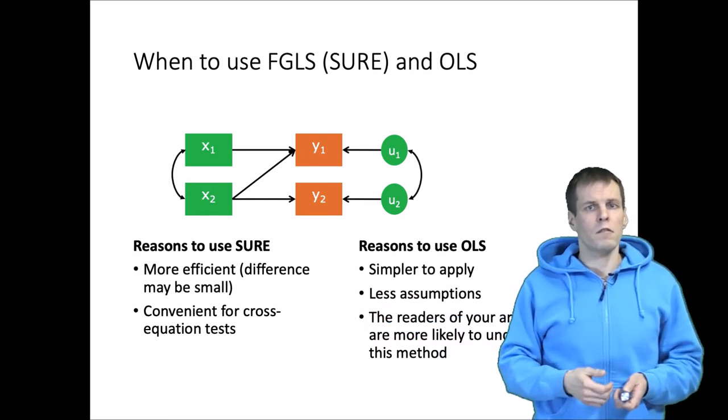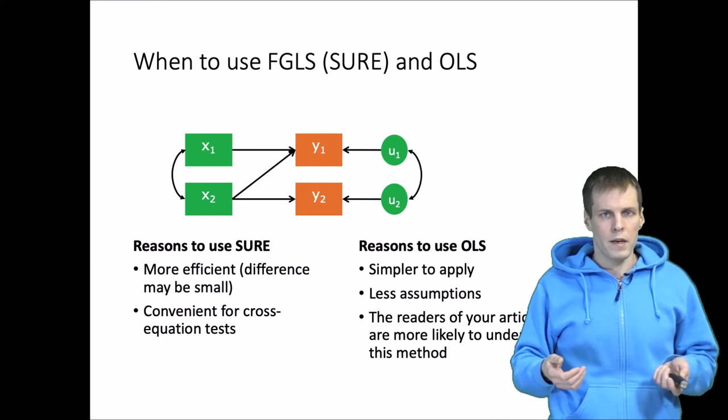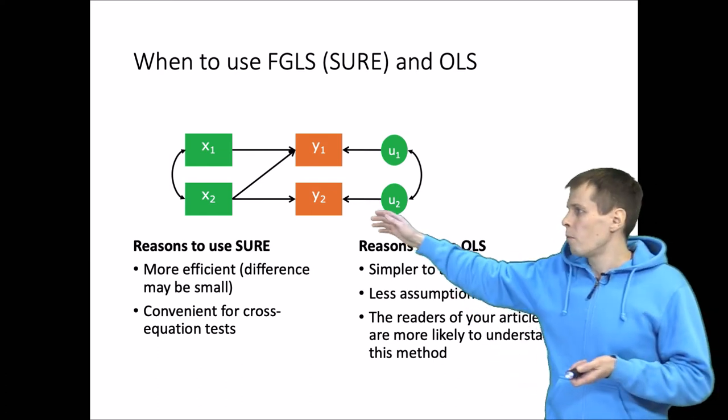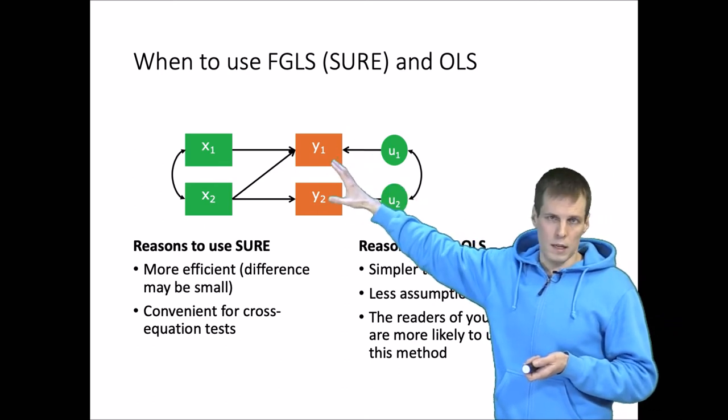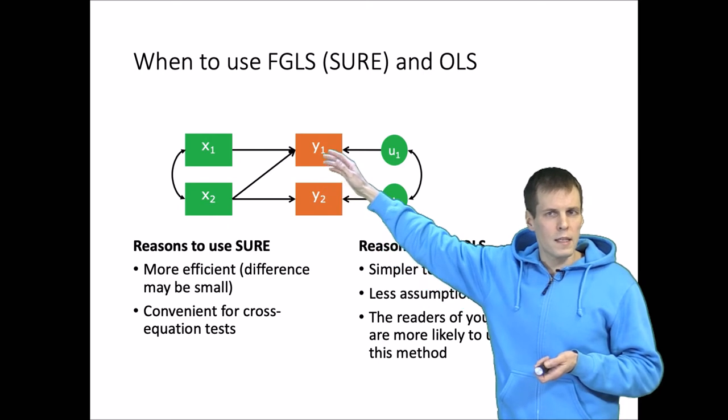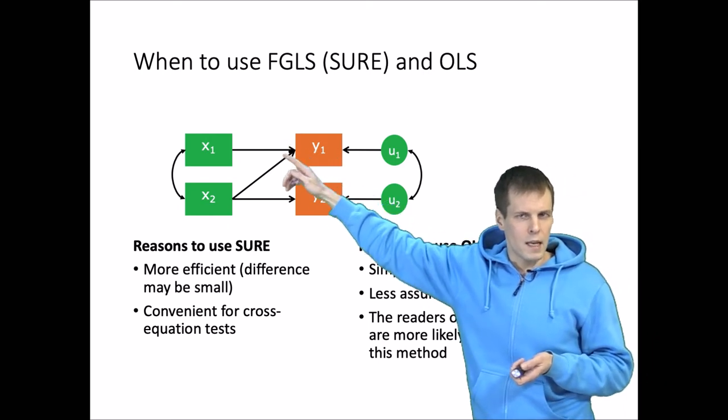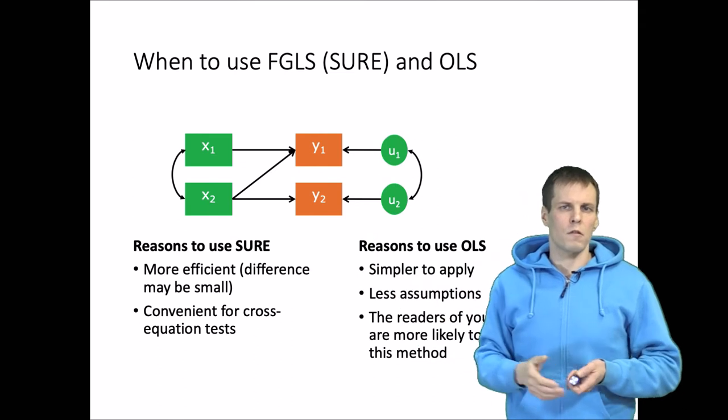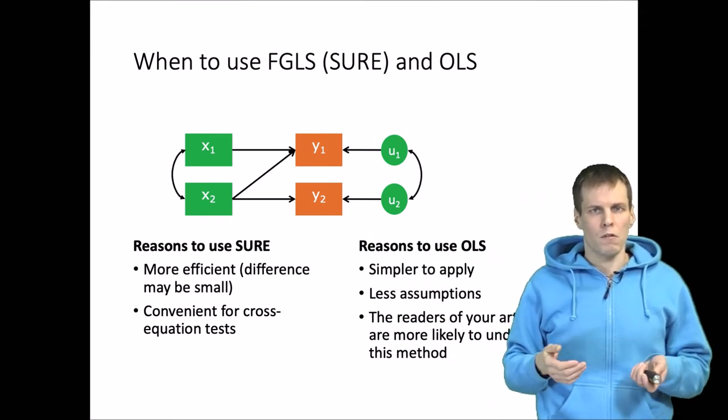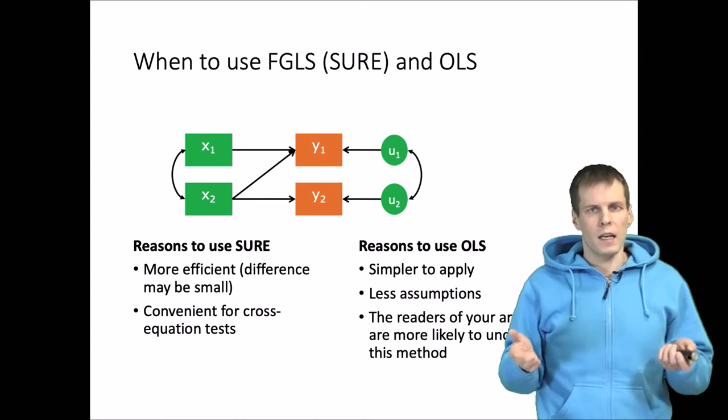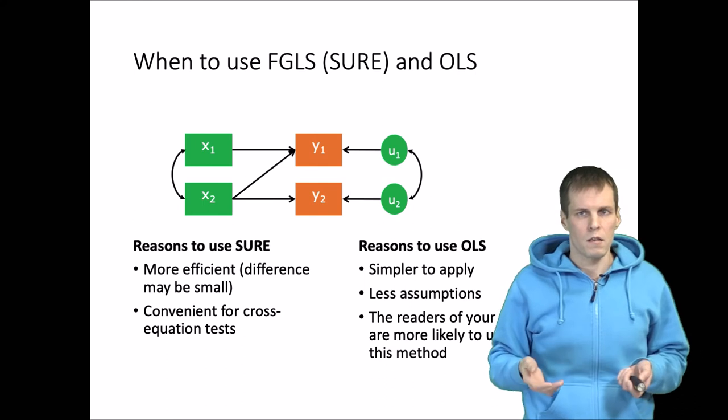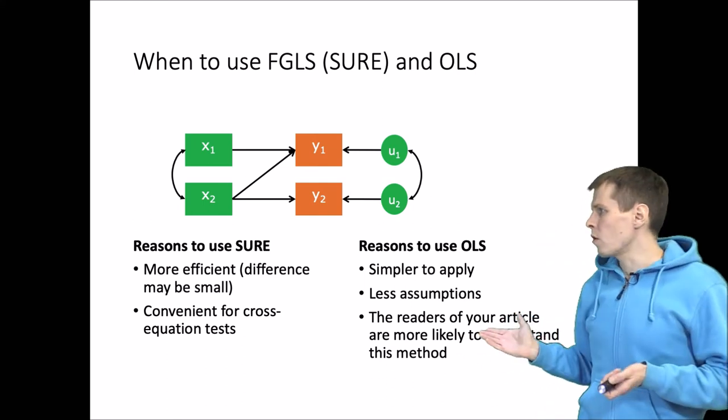After seemingly unrelated regression estimation, we will get the variance covariance matrix of both regression model estimates. So if we want to test post-estimation if this beta one here is the same as that beta one, or these regression coefficients, it's convenient to do. If we run two separate OLS regressions, then getting the covariance matrix that contains both estimates requires some extra work.